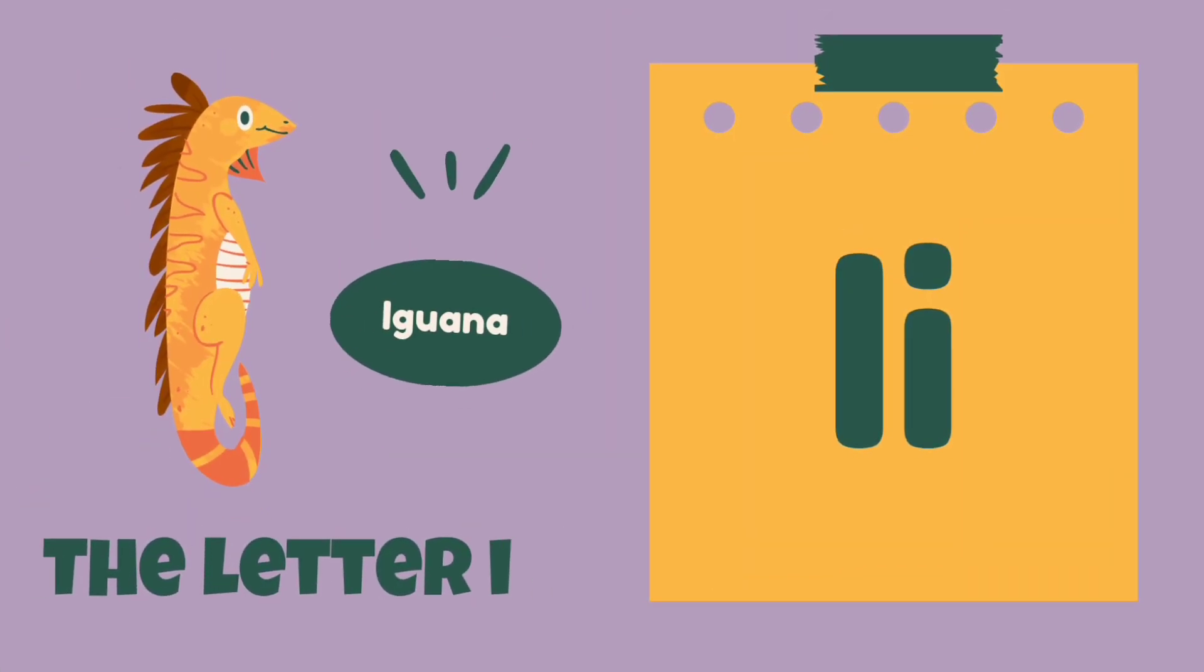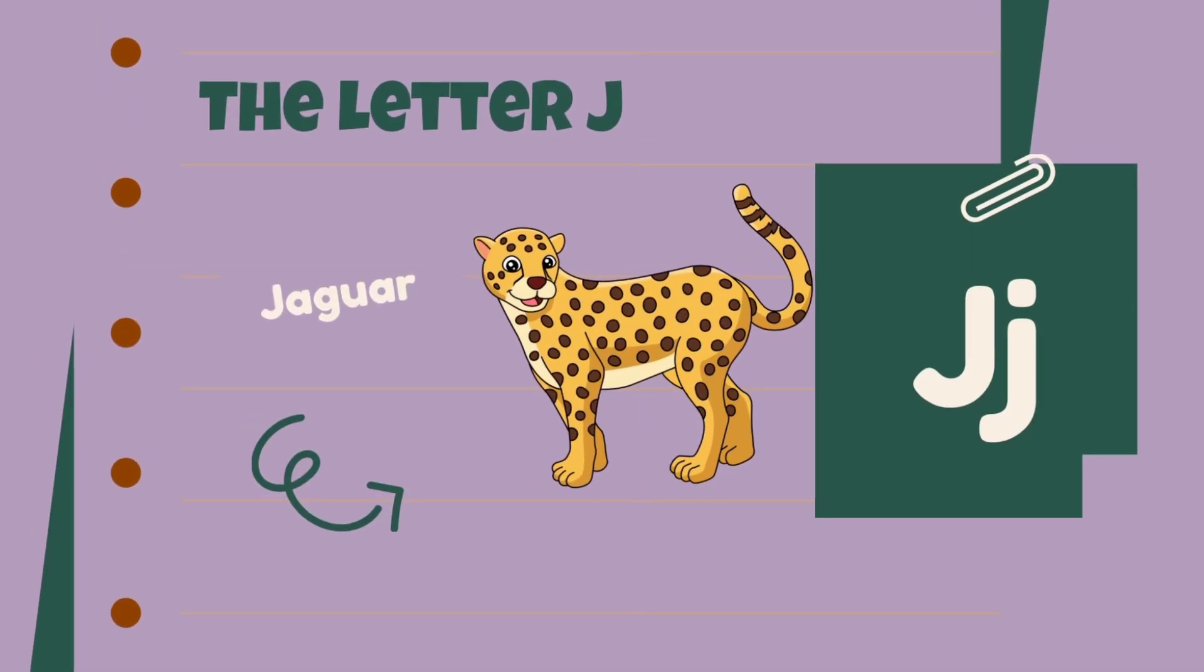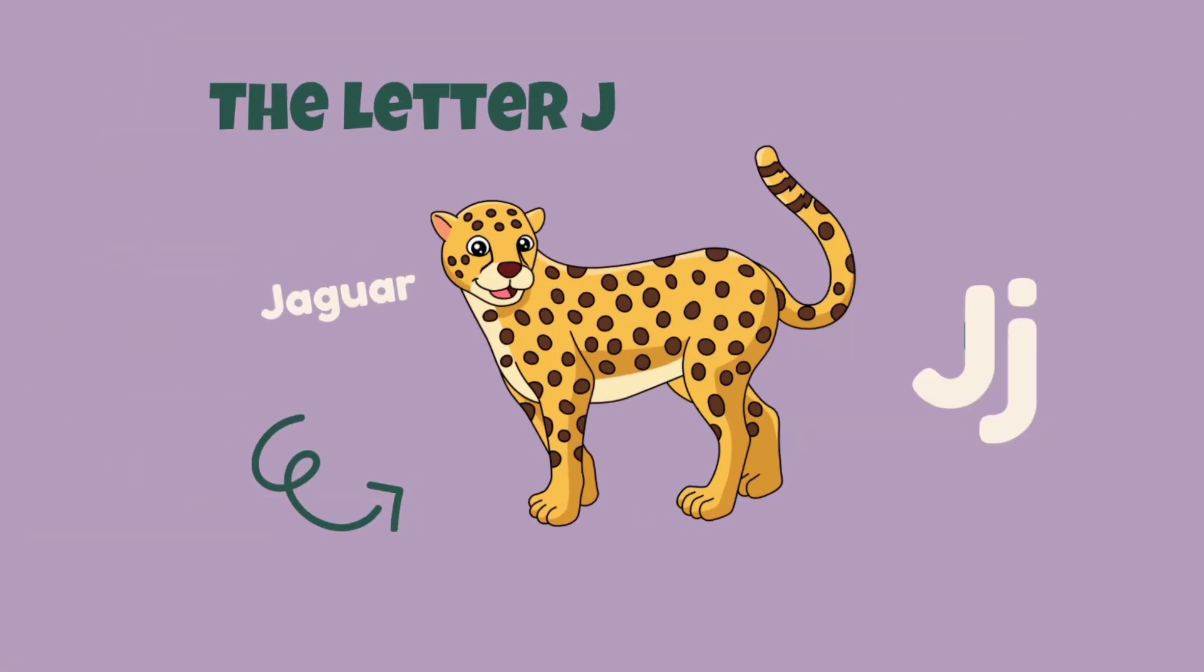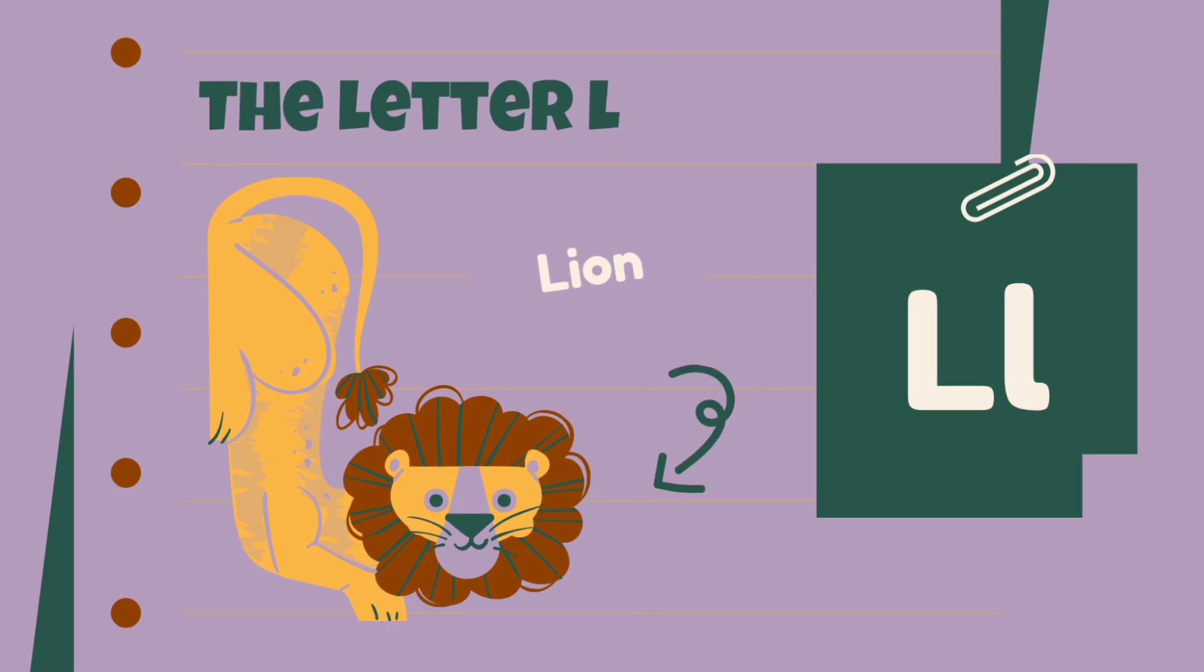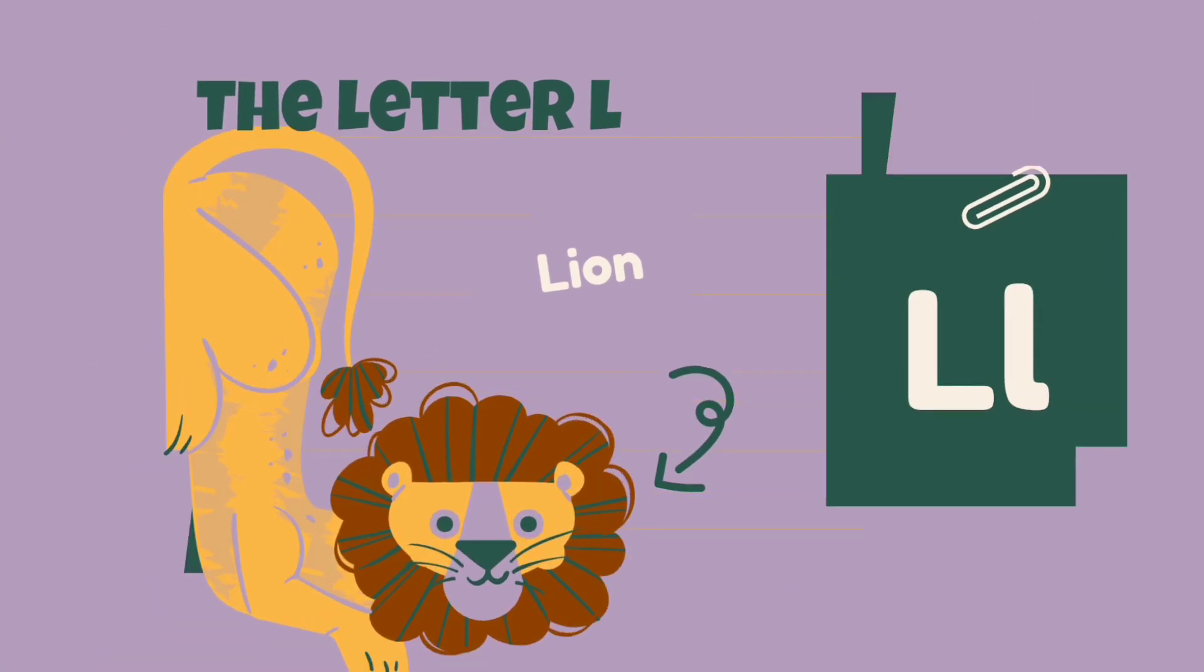I is for iguana, iguana. J is for jaguar, jaguar. K is for kangaroo, kangaroo. L is for lion, lion.